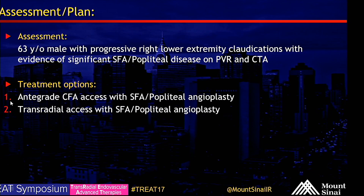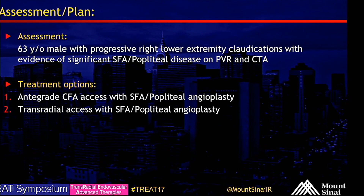So, 63-year-old male with progressive right lower extremity claudications and evidence of significant SFA disease and popliteal involvement on PVR and CTA. The options were to go antegrade via common femoral artery access — complicated by his endograft and ileal conduit — or go transradial access and angioplasty.